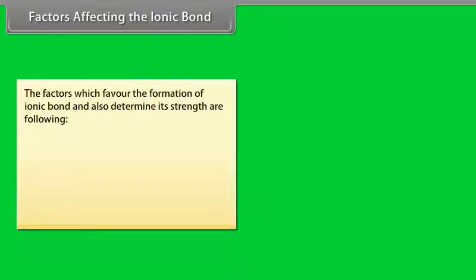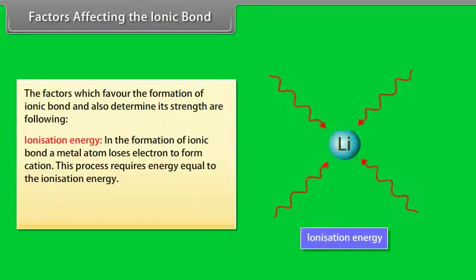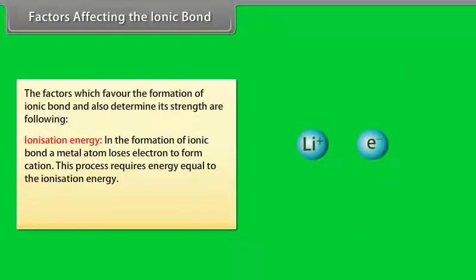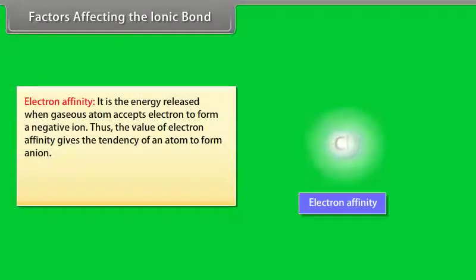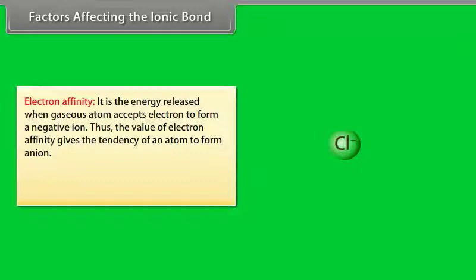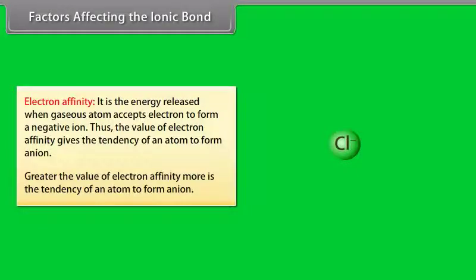Factors affecting the ionic bond. Ionization energy: in the formation of an ionic bond, a metal atom loses an electron to form a cation. This process requires energy equal to the ionization energy. Lesser the value of ionization energy, greater is the tendency of the atom to form a cation. Electron affinity: it is the energy released when a gaseous atom accepts an electron to form a negative ion. Greater the value of electron affinity, more is the tendency of an atom to form an anion.